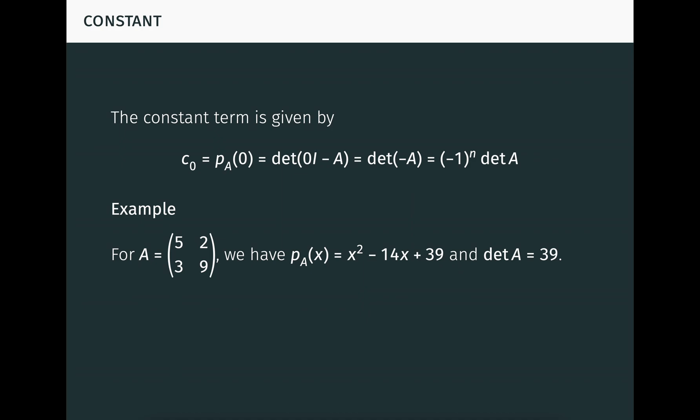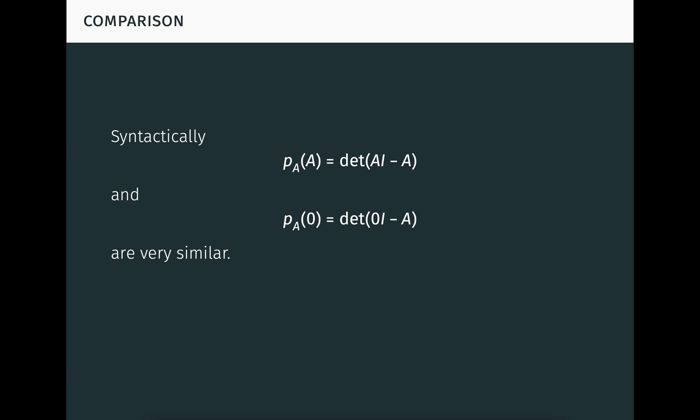As an example with the 2-by-2 matrix from earlier, the constant term of the characteristic polynomial is 39, which is also the determinant of the matrix. After seeing this, it's natural to ask: why does this type of computation work for P_A of zero, but not for P_A of A? After all, syntactically, this equation for P_A of A and this equation for P_A of zero are very similar, and it's not immediately obvious why one is legit and one is not.